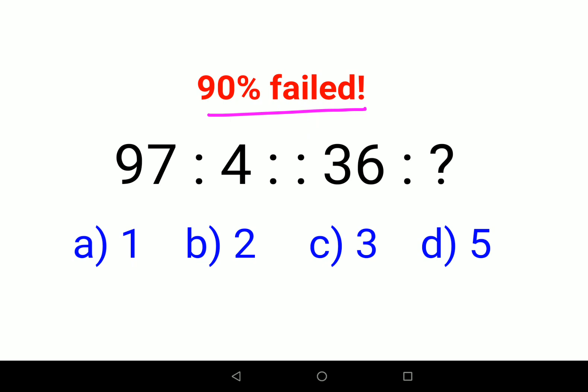The first major problem which anybody could figure out was that 97 gets you anything closer to 4. That becomes very, very tricky. And if you see that the difference between 9 and 7 is 2, so again, if you do 2 squared, that should get you 4.